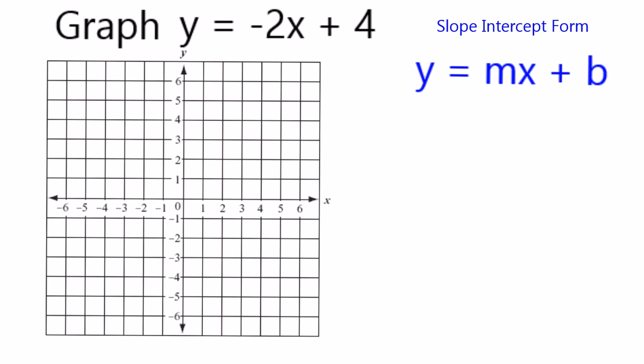In order to graph an equation like this, which is in slope-intercept form, I can consider this compared to the general slope-intercept form. So in this case, we see the negative 2 is my m and 4 is my b.